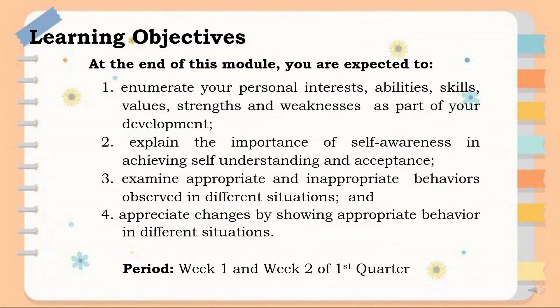Learning Objectives. At the end of this module, you are expected to: Number 1, enumerate your personal interests, abilities, skills, values, strengths, and weaknesses as part of your development. 2, explain the importance of self-awareness in achieving self-understanding and acceptance. 3, examine appropriate and inappropriate behaviors observed in different situations. And 4, appreciate changes by showing appropriate behavior in different situations.